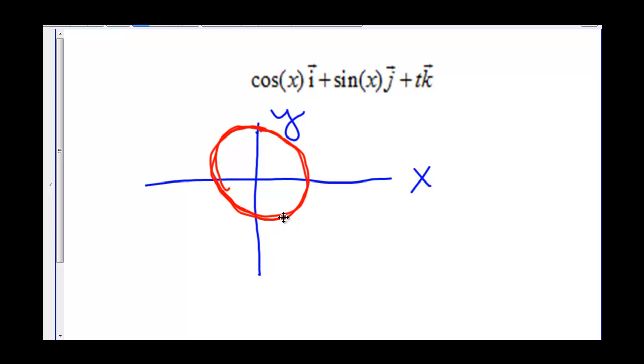As we're traveling along, we're traveling along this circle from above, and what this plus tk tells us is the height. So in three dimensions, we're traveling around our circle and our height is increasing. We're spiraling up.